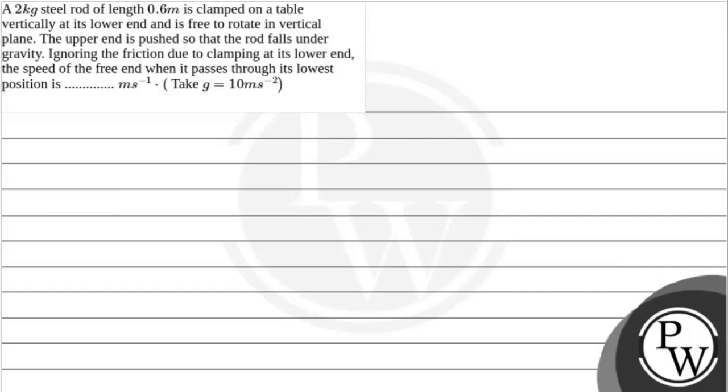Hello Victor, let's read the question. The question says, a 2kg steel rod of length 0.6m is clamped on a table vertically at its lower end and is free to rotate in vertical plane. The upper end is pushed so that the rod falls under gravity. Ignoring the friction due to clamping at its lower end, the speed of the free end when it passes through its lowest point is dash meter per second. Take g equals 10 m/s².